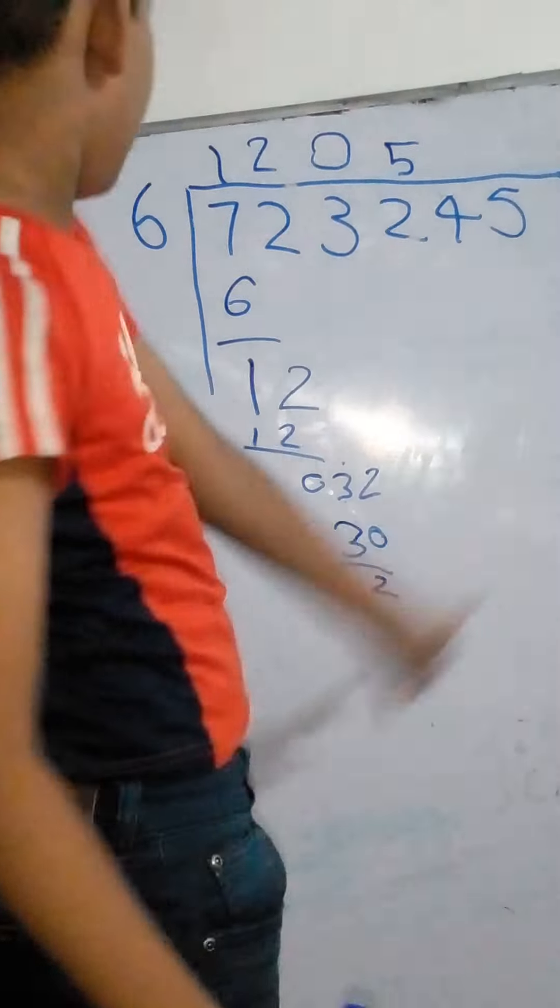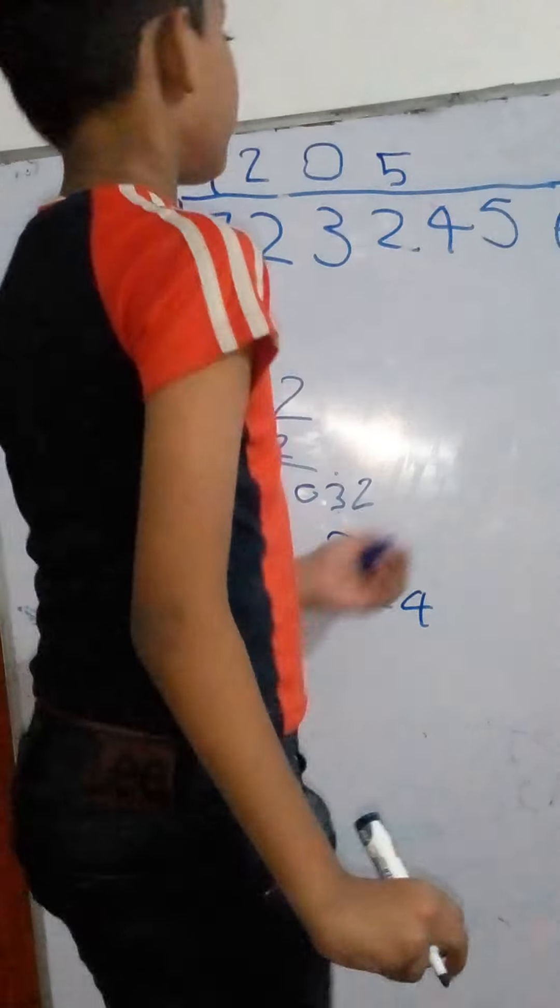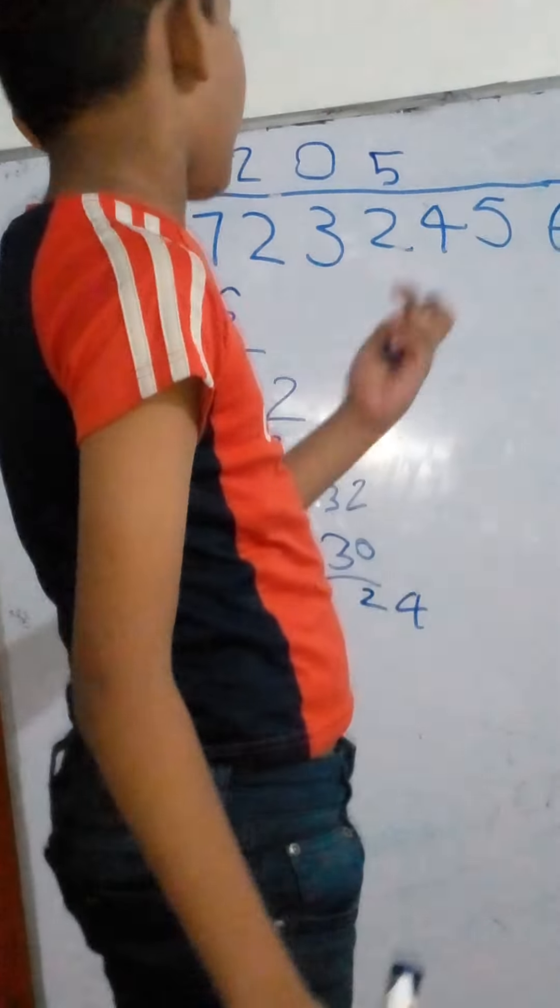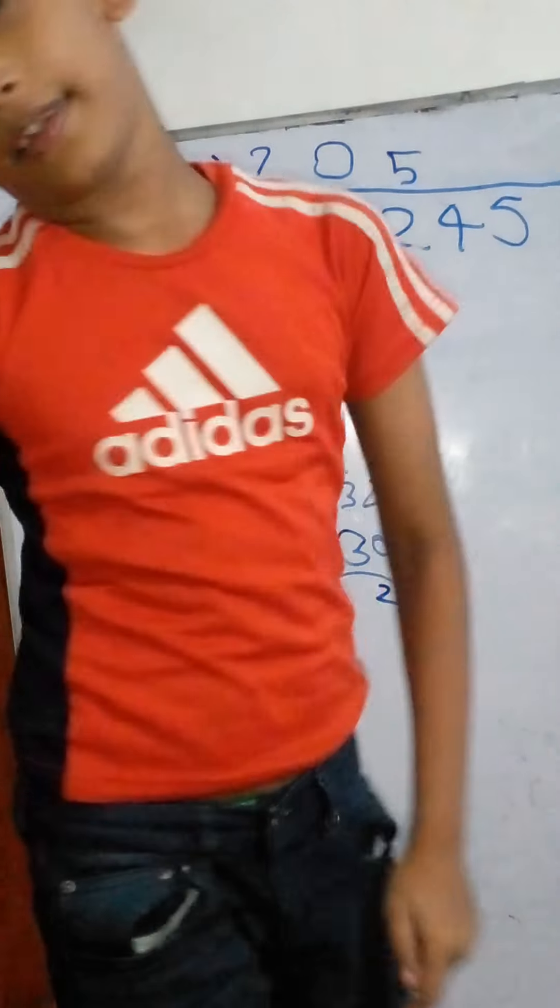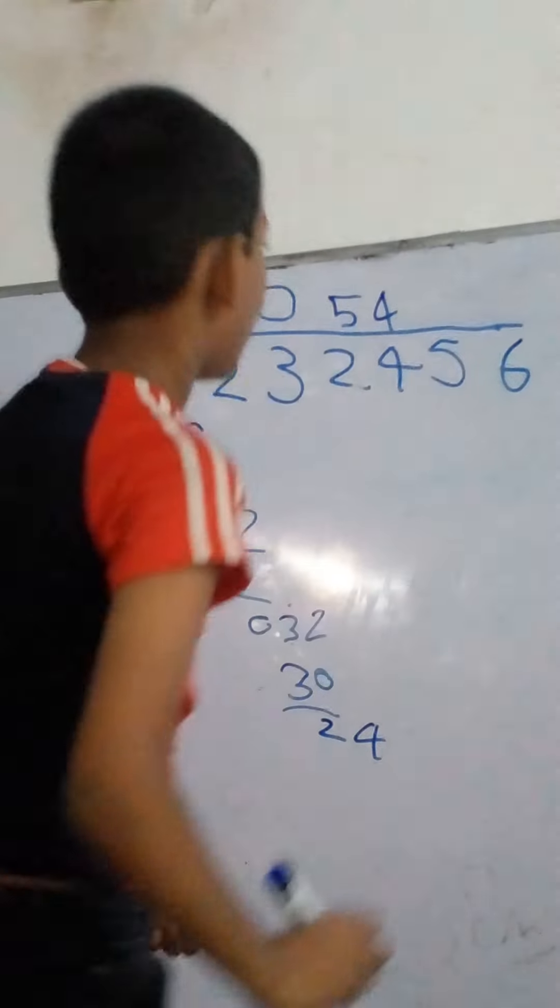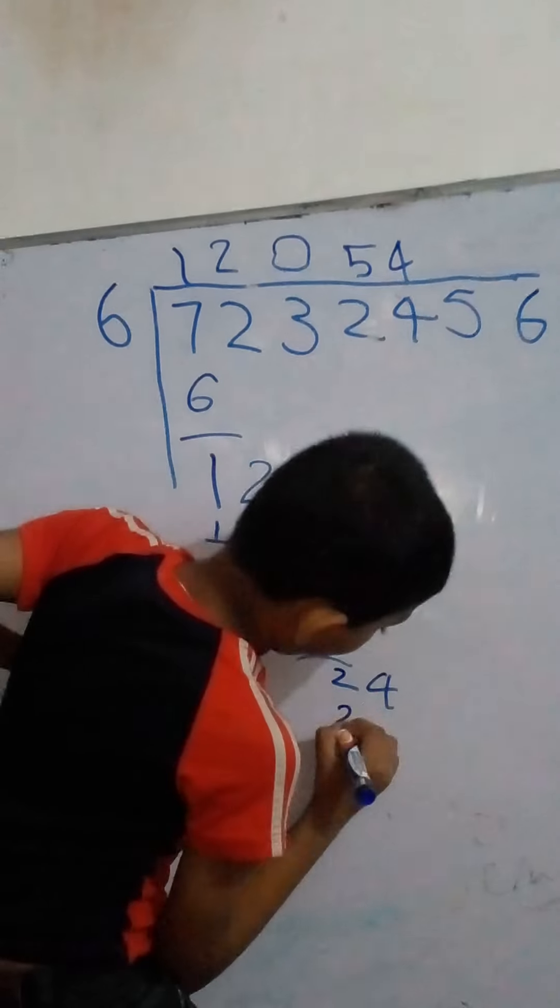And now we like this. Now four gets here. Twenty-four divided by six is four. Four times six is twenty-four.